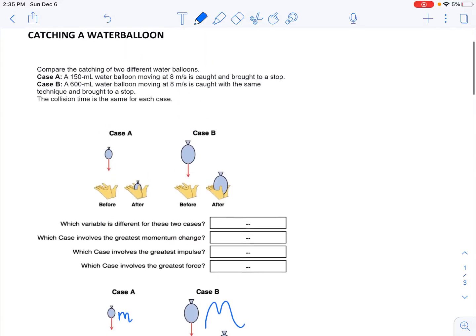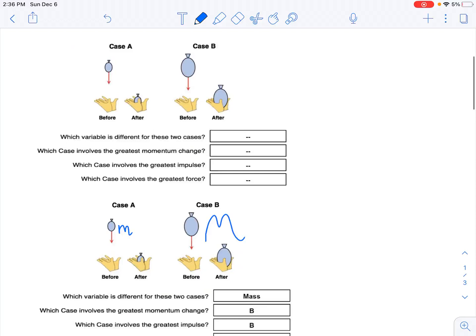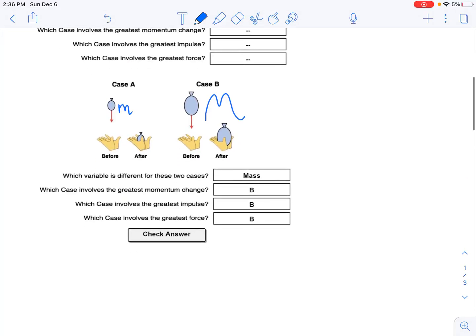One thing you need to read carefully is the instructions up here. It gives you the masses, so at least you know right away that they're different sizes. But also the fact that they are moving at the same speed when they are being caught. The other thing is the collision time is the same. So just read those carefully so you can compare them properly.